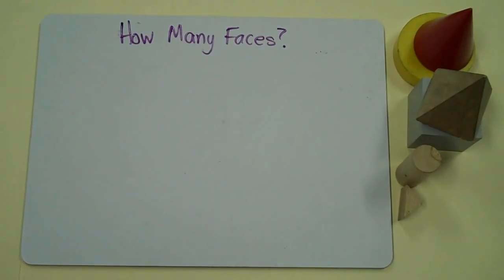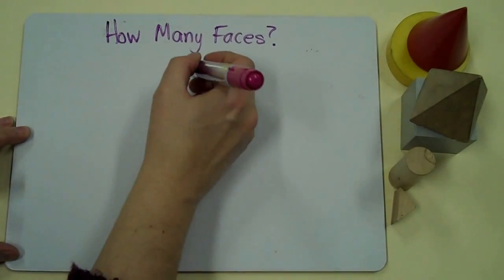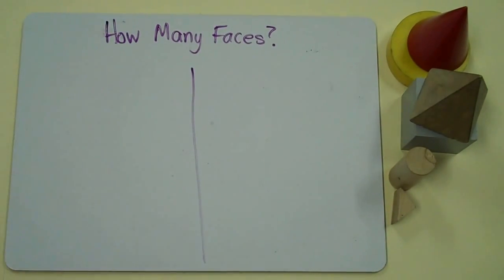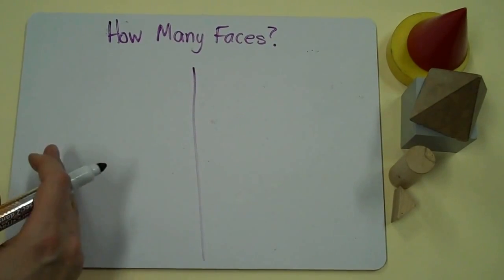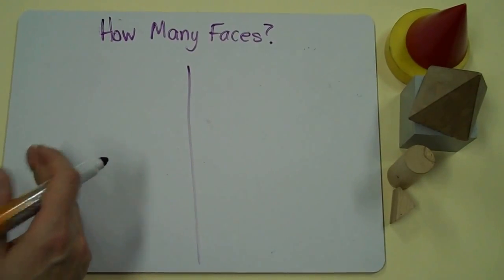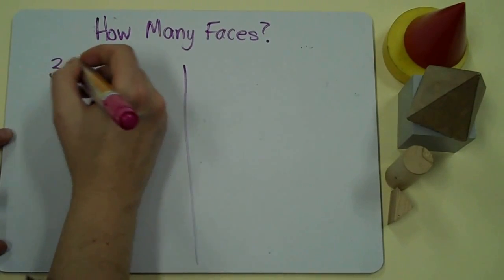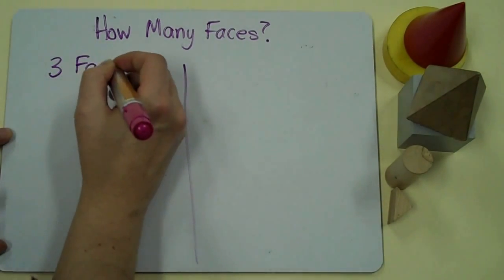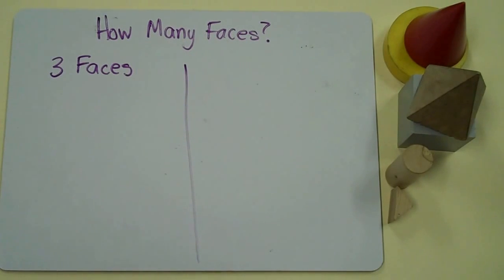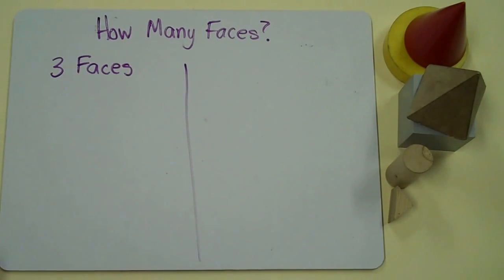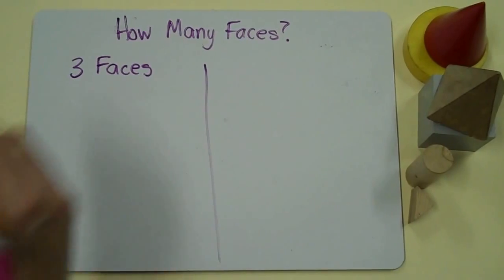Once I have my rule selected, I can make two groups. Each group has to follow the rule of how many faces. In one group, I'm going to sort objects that have three faces. My second group also has to follow the sorting rule of how many faces, but it has to be different than the first. In my second group, I'm going to put objects that have five faces.